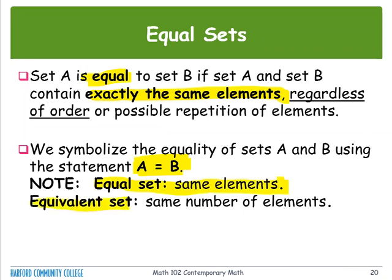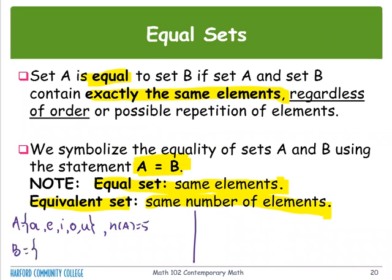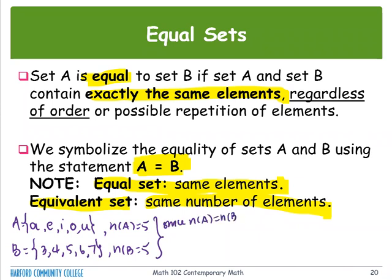For equivalent sets, only the total number of elements needs to be the same. Going back to our previous example: A = {a, e, i, o, u}, so n(A) equals five, and B = {3, 4, 5, 6, 7}, so n(B) equals five. Therefore, n(A) equals n(B), which means A and B are equivalent.